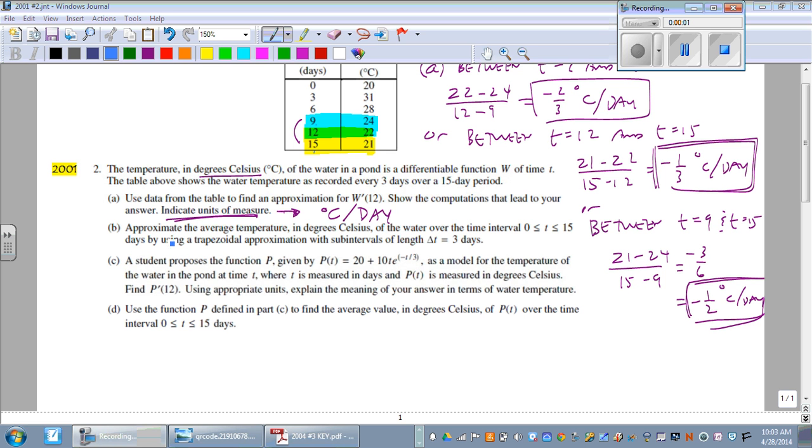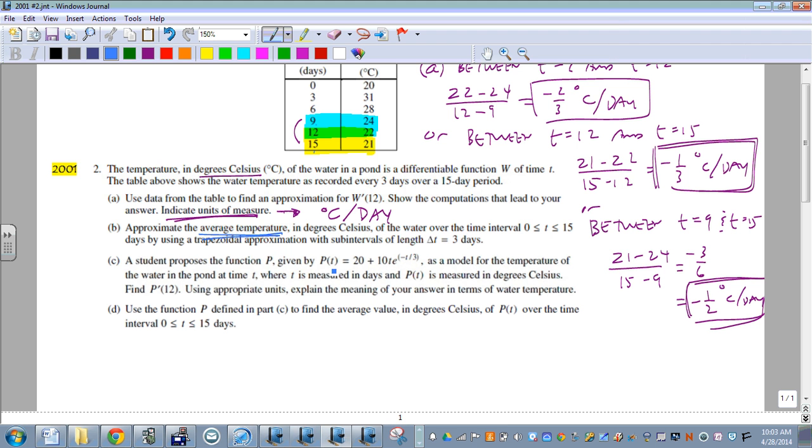For part B, we're approximating the average temperature in degrees Celsius of the water over the time from t equals 0 to t equals 15 by using a trapezoidal approximation with subintervals of equal length 3 days. It's always nicer when you have the same length subintervals. Here we're using a trapezoidal sum, and we're using the average temperature. So this is key: average temperature.